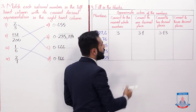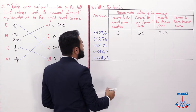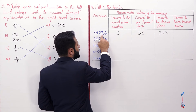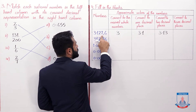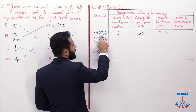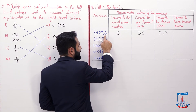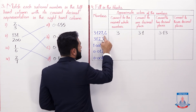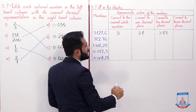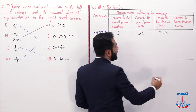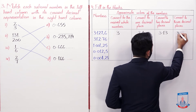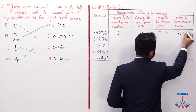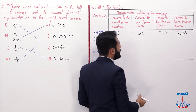For three decimal places of 3.1276: three decimal places go up to the 7. The next digit is 6, which is greater than 5, so we round up and it becomes 3.128.